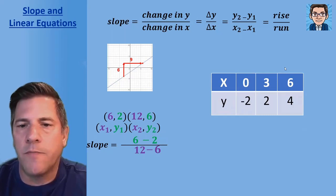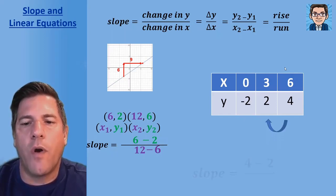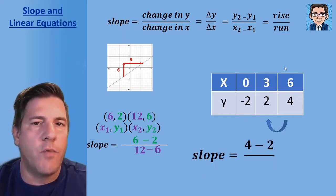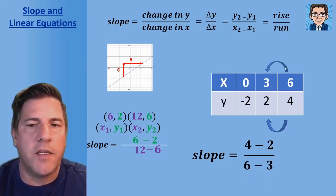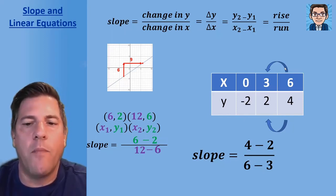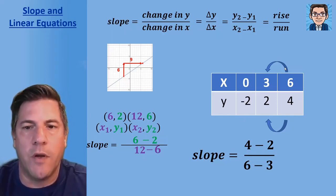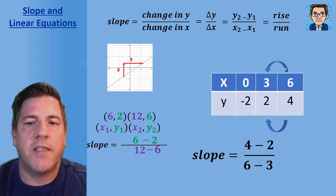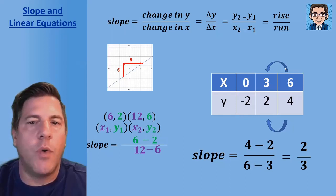If we have a table of values, it's very similar to using two points — just pick any two points from the table. Here, four minus two gives the numerator, and six minus three gives the denominator. One important thing: go in the same direction. If we do four minus two, we must do six minus three — don't switch it around. You can do three minus six and two minus four, just keep it consistent. That gives us two over three.